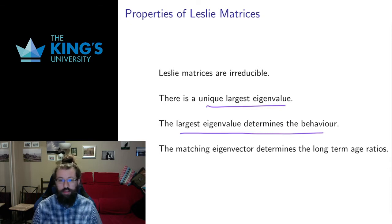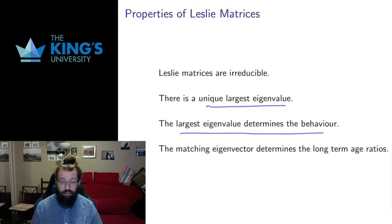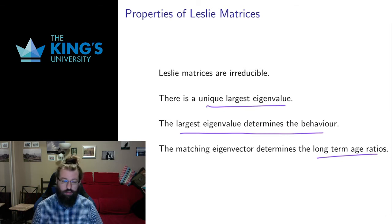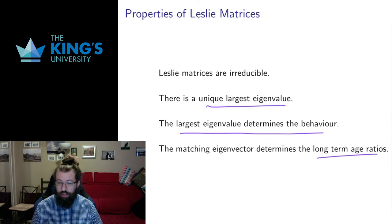This is a good example of what I said in the previous week: in many applied mathematics systems using linear algebra, all we often need to do is calculate eigenvalues and interpret them. We've got this complicated system of age structures and populations, and all we need is one eigenvalue to determine how the system behaves. The eigenvector will determine the age ratios — the ratio of category one to category two, category one to category three — which can also be interesting information.